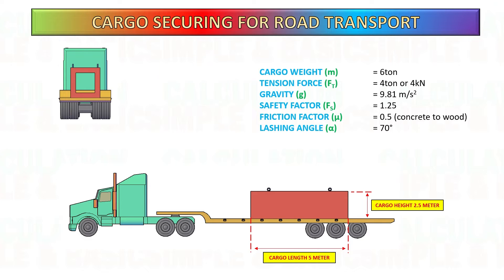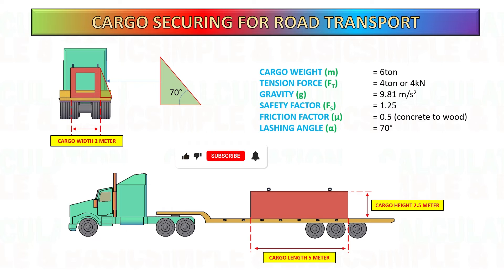Concrete to wood, based on the friction table. The length of the cargo is 5 meters, height 2.5 meters, and the width is 2 meters.